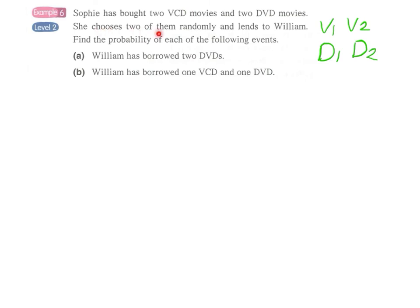And let's suppose she chooses two of them randomly and lends to William. Find the probability of each of the following events. Before we can complete part A and part B, we can draw a tree diagram to show all the possible outcomes.